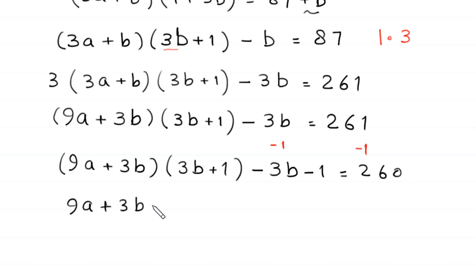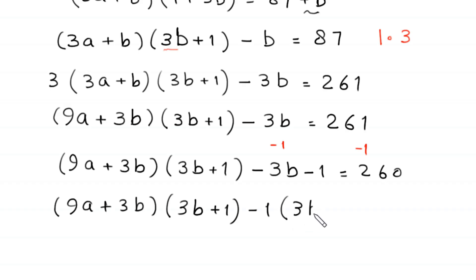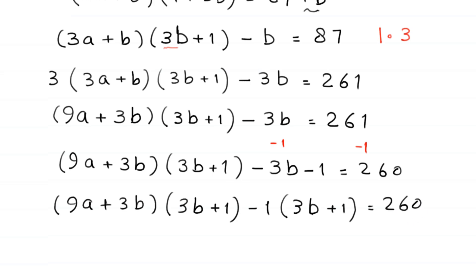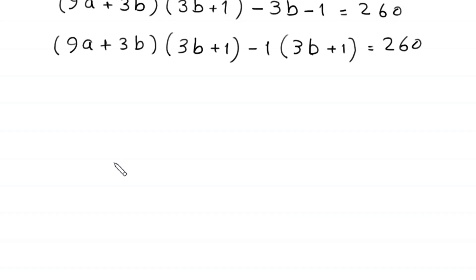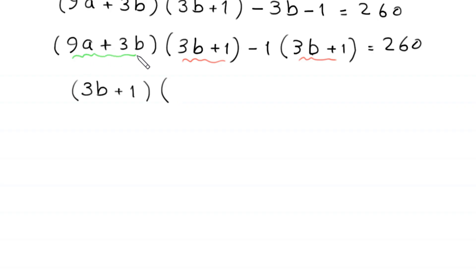From the terms (3b + 1) and −1, we factor out −1 as a common factor. Then (3b + 1) is common to both remaining terms, so we factor it out: (3b + 1)(9a + 3b − 1) = 260.